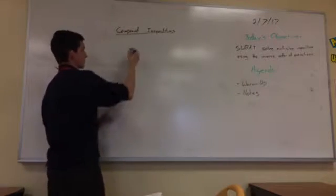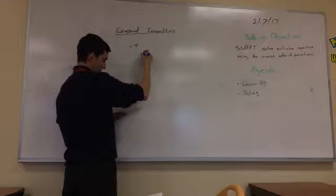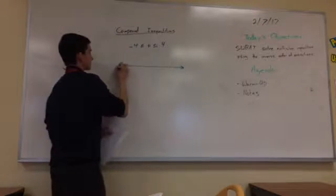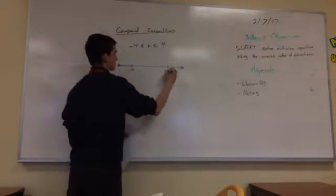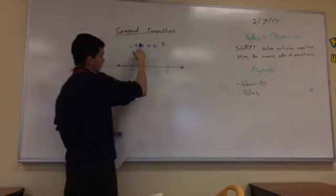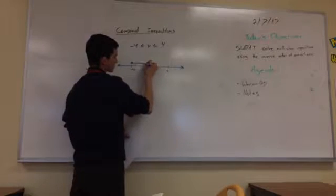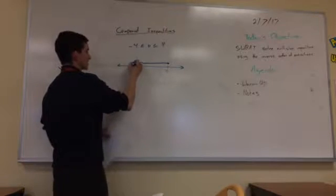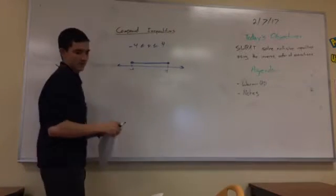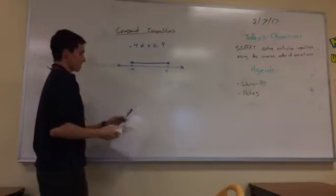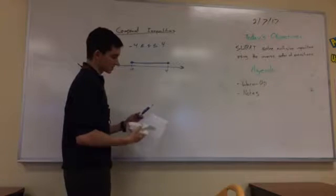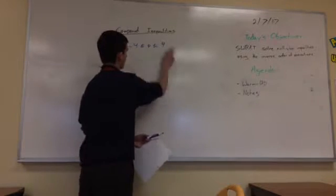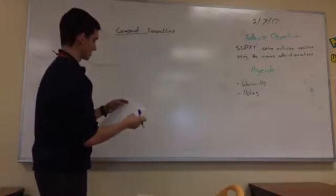A second example: graph negative 4 less than or equal to p, which is less than or equal to 4. So again, negative 4 and 4. p is greater than or equal to negative 4, so greater than negative 4 is this way, then less than positive 4 is back this way — it's somewhere in between these two points. By the way, on the worksheet linked on Schoology, I'm just going through the evens right now — I've already done number 1, this is number 4, and probably number 6 is coming up next.